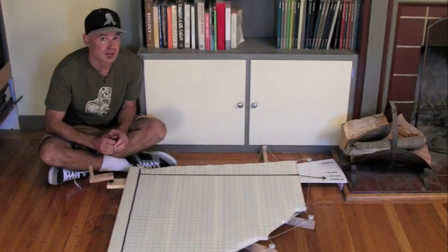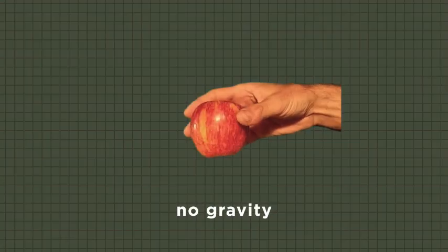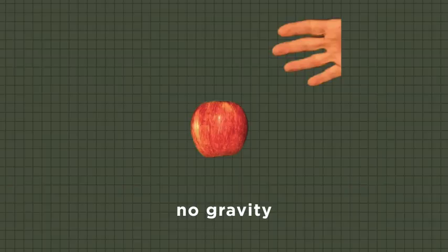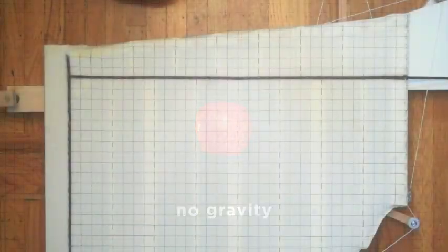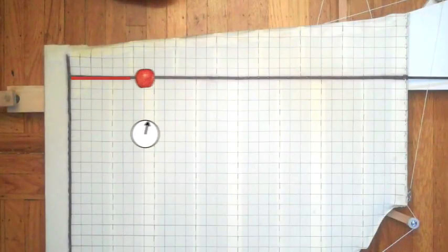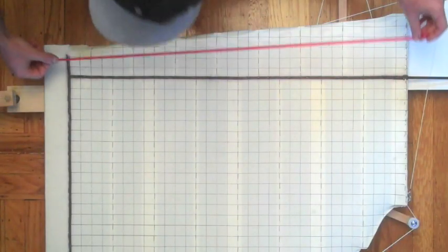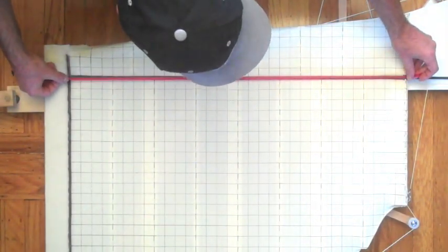Now pretend for a minute that there's no gravity. If we let go of an object, it would just float there. Time would pass, but it wouldn't go up and it wouldn't go down. On our graph, it would follow a flat line along the time axis only. We can represent that line with a strip of colored tape. This is what happens as time passes. The apple stands still.